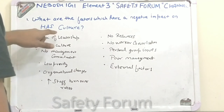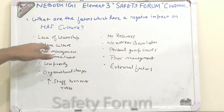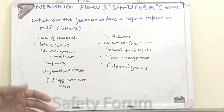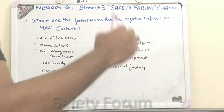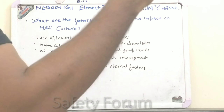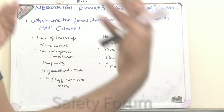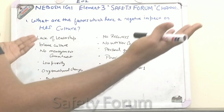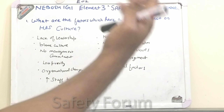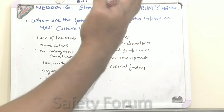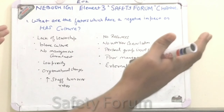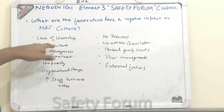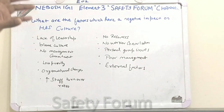The second one is the blame culture. If there is some issue and one person is putting blame on another — the person who made the mistake is blaming another group of persons, or a co-worker is putting the blame for any failure on other people — that is a blame culture, and it will again have a negative impact on the health and safety culture.